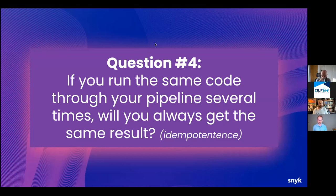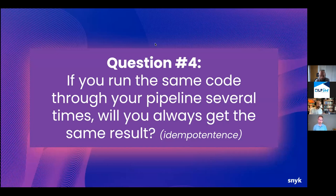Either you disregard error messages — which is a bit dangerous because how do you know you're disregarding the right one? Maybe it's an authentication error rather than a 'bucket already exists' error. Or you defensively check: if the bucket doesn't exist, create it; if it does exist, assume everything's fine. We sometimes see that with credential creation too — scripts that might create SSH keys, key pairs, or certificates that generate a new one every time they're run, which is not necessarily what you want.